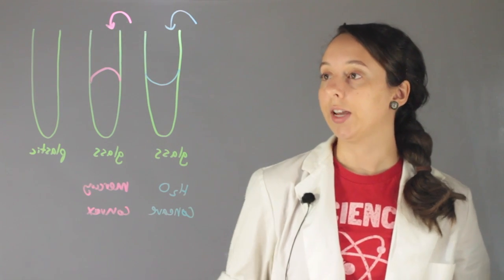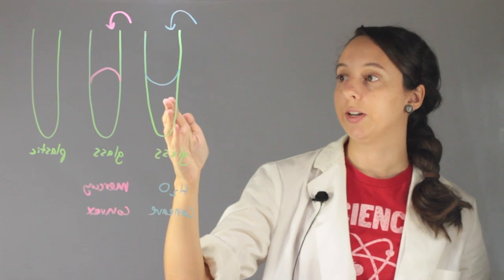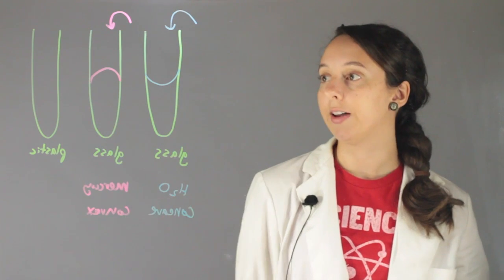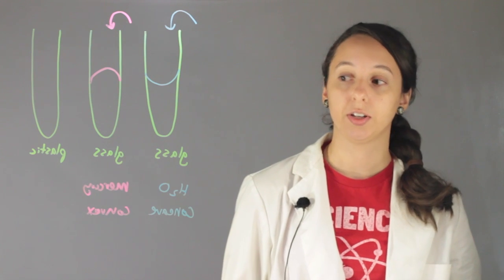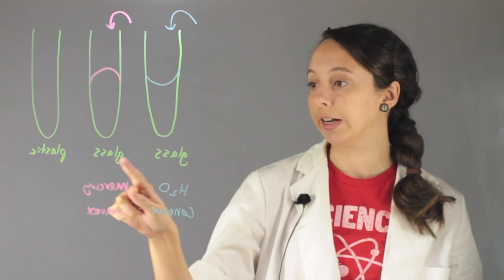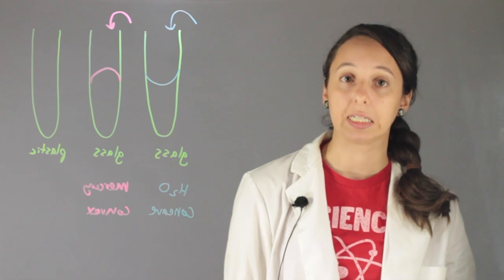So why does H2O have a concave meniscus and mercury have a convex meniscus? Well, it all has to do with intermolecular forces. As you notice, both of these beakers are made of glass, and glass is made of mostly silicon.